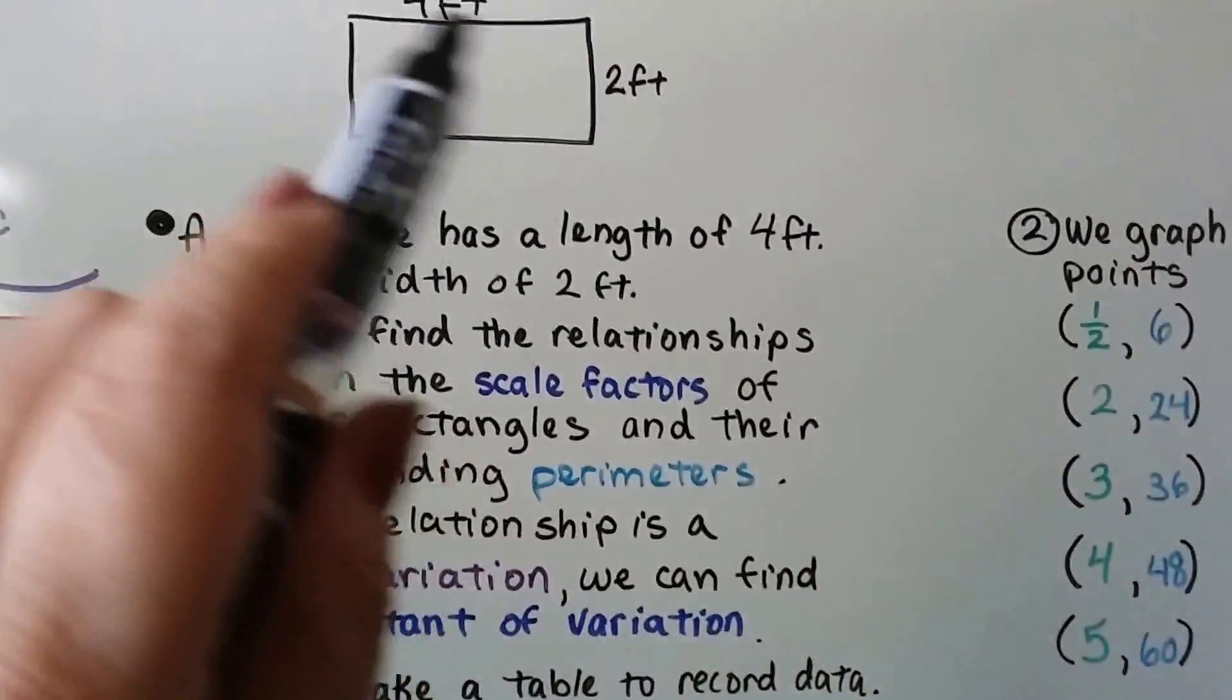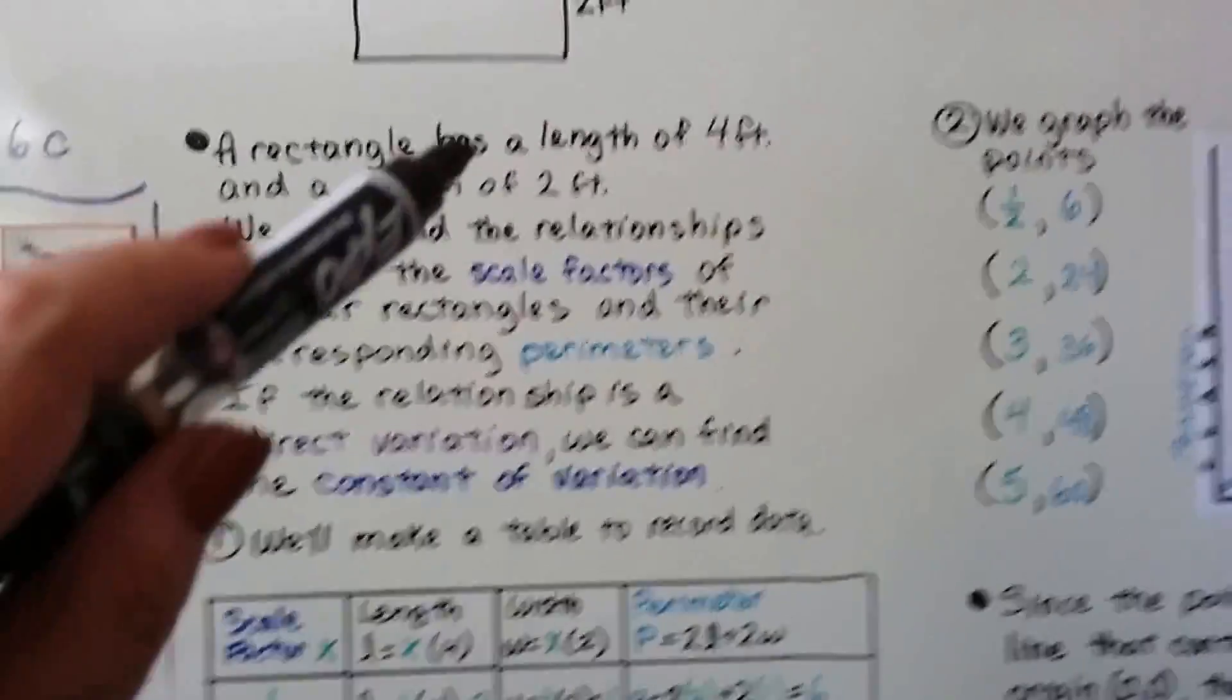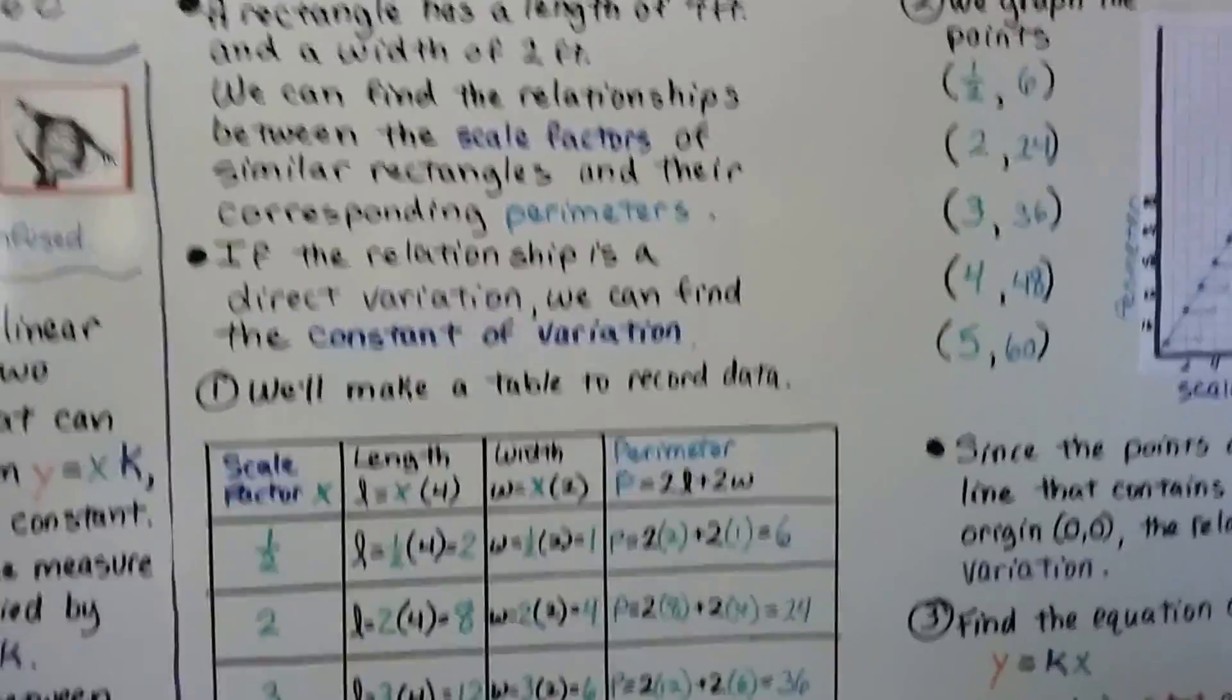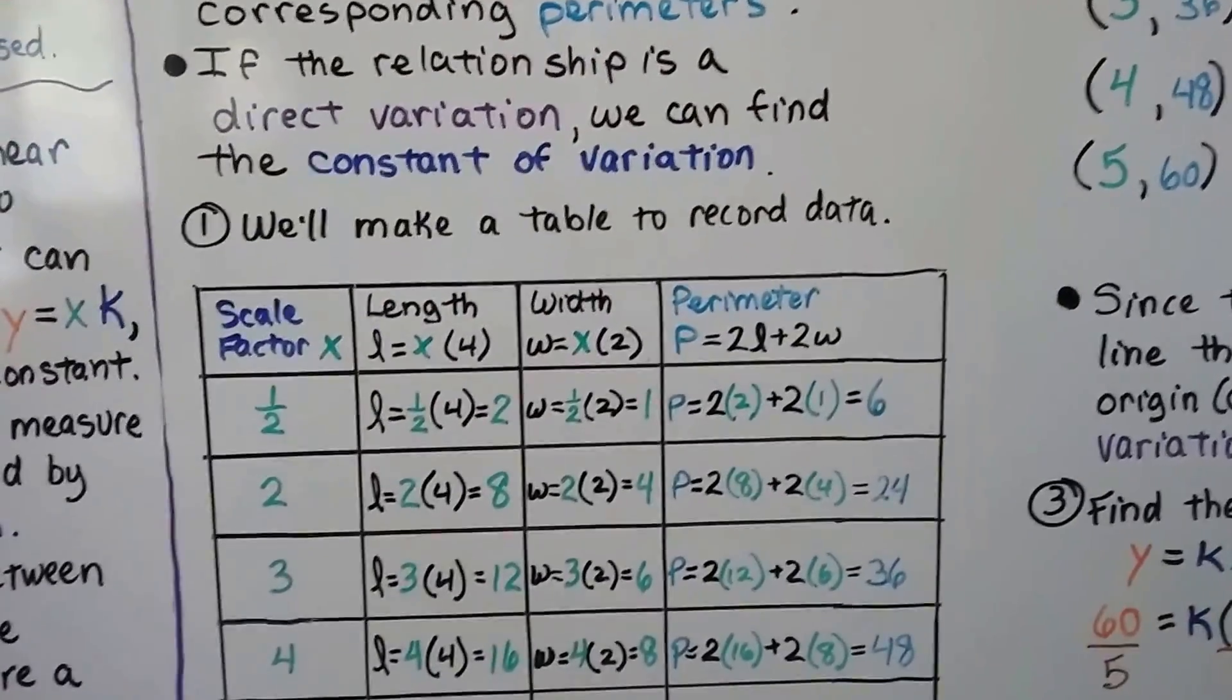And the width is going to be x times 2, because that's our width. Then the perimeter is going to be equal to 2 times length plus 2 times width, like a normal perimeter.